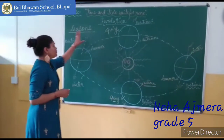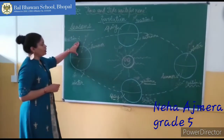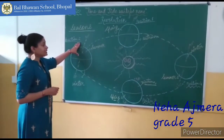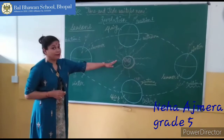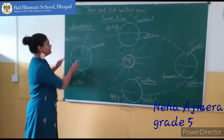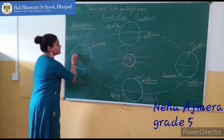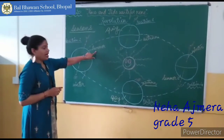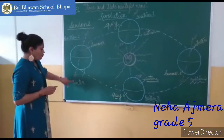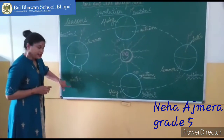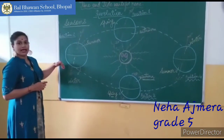Let's come to position number two. Here, the north pole is tilted towards the sun. So what will happen? The upper northern hemisphere will experience summer, and the southern hemisphere will experience winter, because it is a little away from the sun.